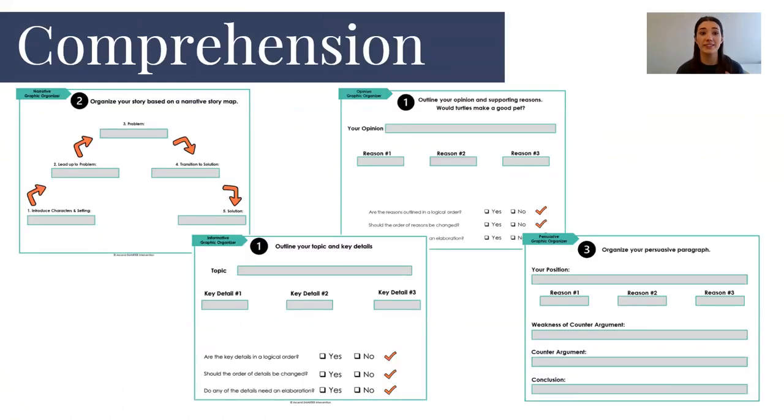The last area that we address is comprehension. So there are a bunch of different styles of writing that we will address with students and this is where that comprehension piece comes in. They need to understand that if they're responding to a narrative prompt versus an opinion or an informative or persuasive, these are going to be structured differently. It's important to know that both for reading and writing. So a narrative is always going to follow our story arc. We'll introduce characters in the setting, we'll lead up to the problem, the problem or the climax of the story will occur, it will transition to the solution, and then we'll end with a solution.